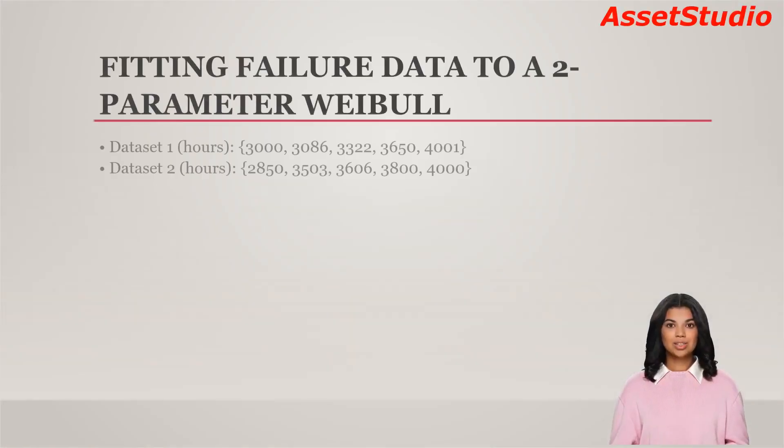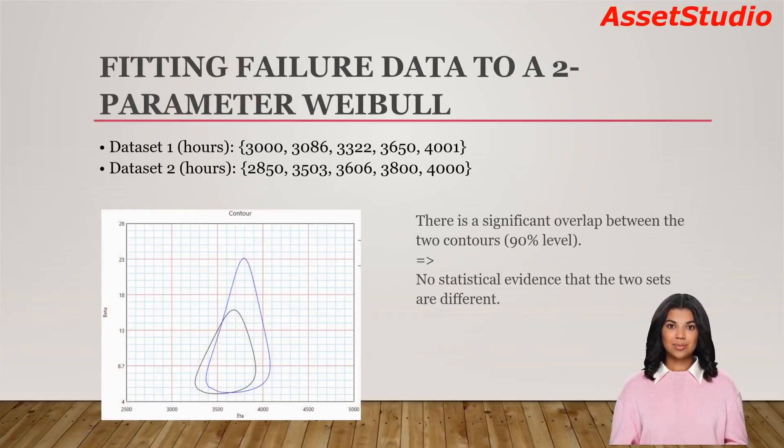From the contour plots, there is a significant overlap between the two contours. That is, there is no statistical evidence that the two sets are different. You want to know if gamma exists, and so you proceed with the 3-parameter Weibull analysis. Perhaps you are convinced that it is not possible to fail within the first 1000 hours. Note that you are expecting a positive gamma.